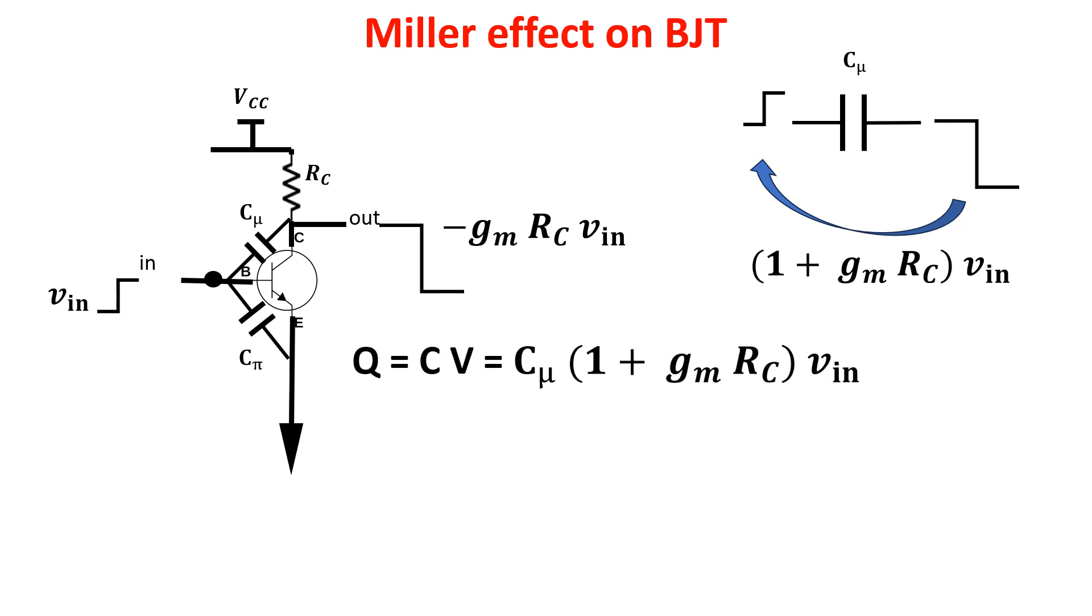If we put ourselves in the input perspective and see things from the input, we see that we give just a Vin pulse and we get all this charge here. So from the input perspective, being the voltage just Vin, we see all this as capacitance. So the capacitance Cmu is magnified by the factor 1 plus GM·RC, which is 1 minus the gain of the amplifier.